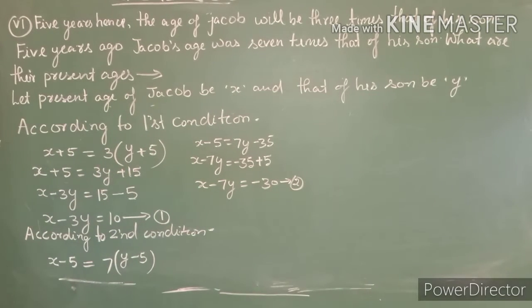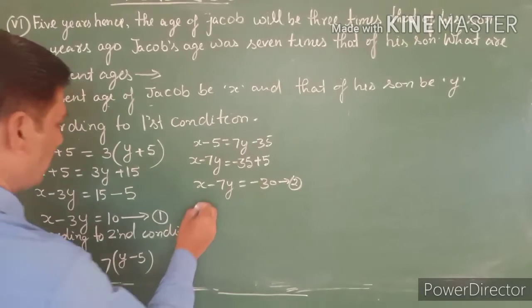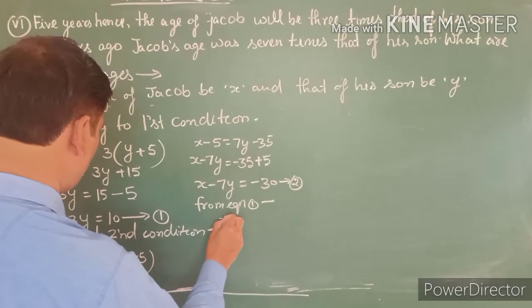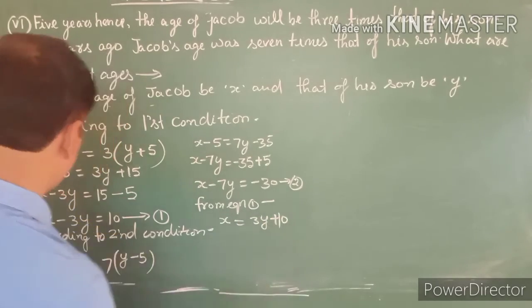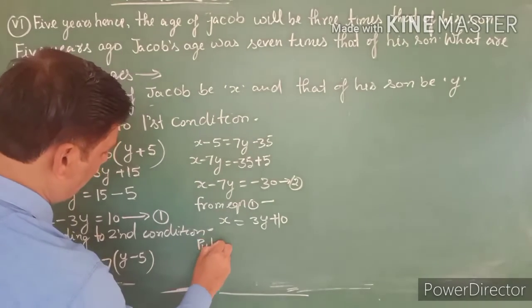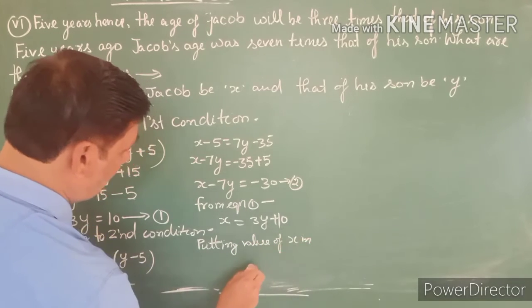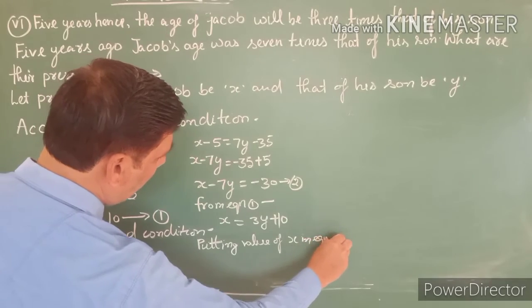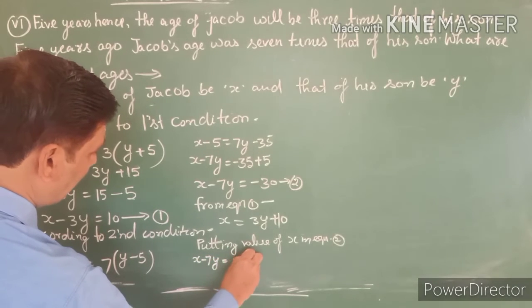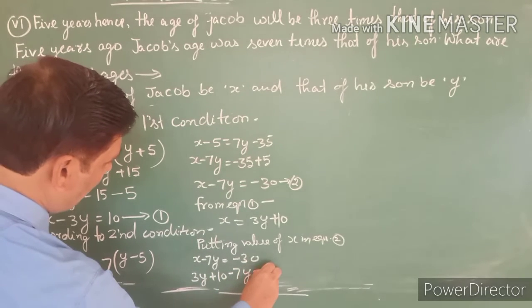Now we will substitute the values. From Equation 1, x equals 3y plus 10 (moving 3y to the right side, minus becomes plus). Putting the value of x in Equation 2: x minus 7y equals minus 30, substituting x with 3y plus 10.